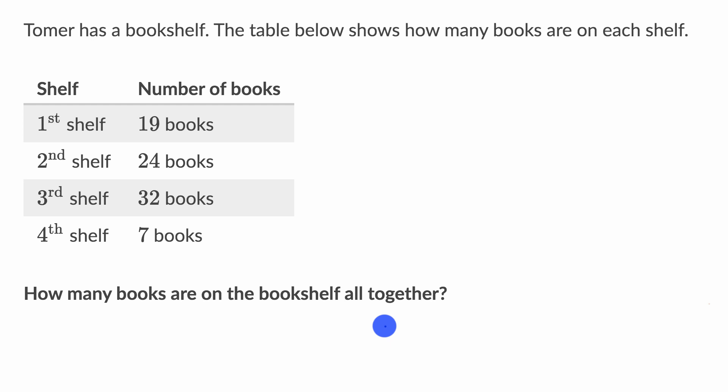All right, now let's work through it together. So if we want to figure out how many books are on the bookshelf all together, we essentially have to add 19 books to 24 books to 32 books to seven books. So really this is going to be 19 plus 24 plus 32 plus seven. That's what we really have to figure out.